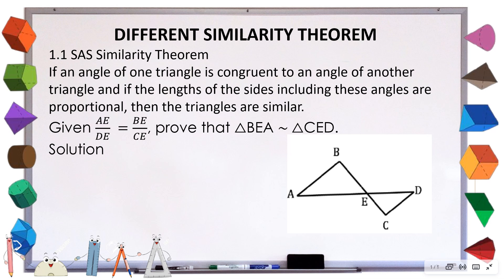Let's prove this. Given that triangle BA is similar to triangle CED, we're given that we already have two proportional sides — that is already the S. So we only have to find the angle (A) to prove the two triangles are similar. We have AE over DE proportional, and BE over CE. So we just need to find one angle.